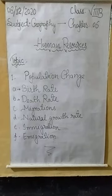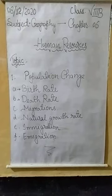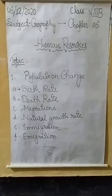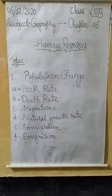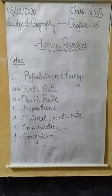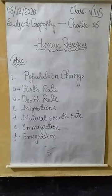Life expectancy is the number of years that an average person can expect to live. Next, migration — the movement of people from one area to another area is called migration. The natural growth rate, as mentioned, is the difference between the birth rate and the death rate of a country.